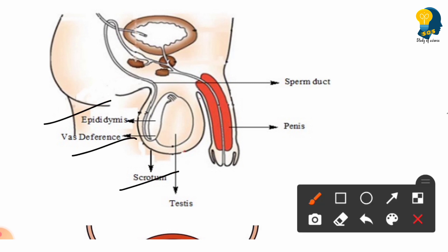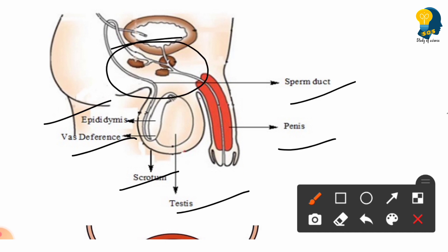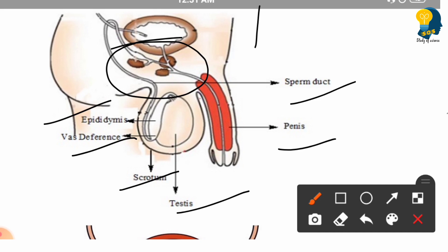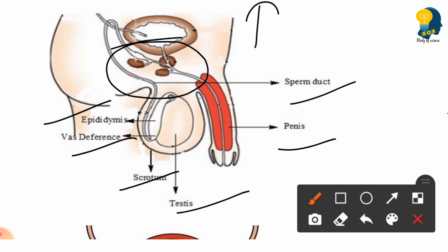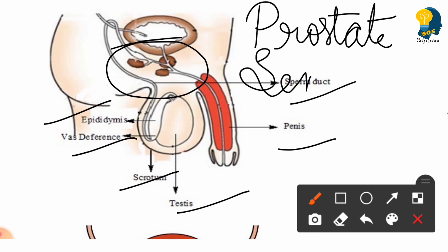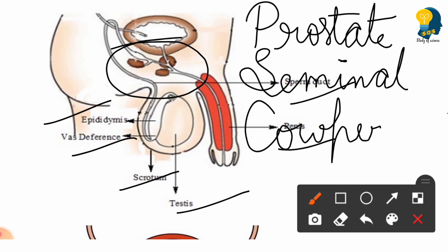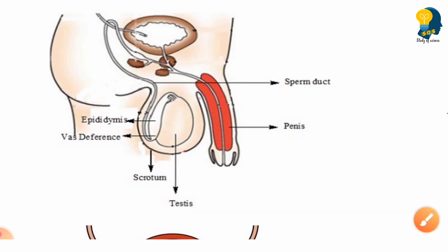Apart from these structures, there are some glands present in the human male reproductive system that also help in performing important functions. The three important glands are: the prostate gland, the seminal vesicle, and the cowper's gland. These glands help by adding secretions as the sperm moves from the testes to the penis.